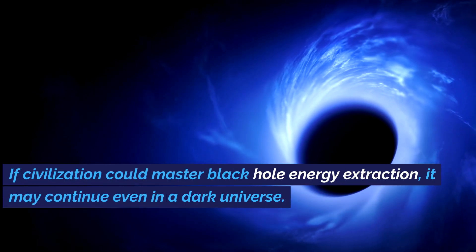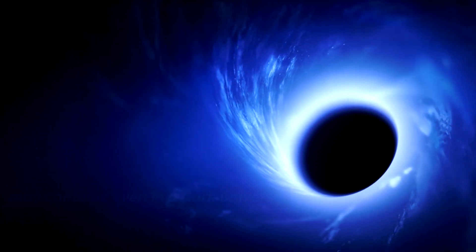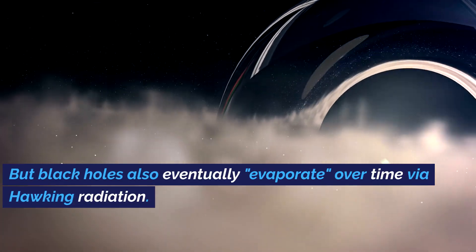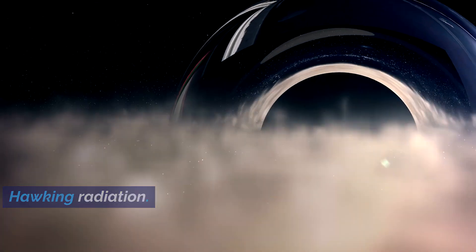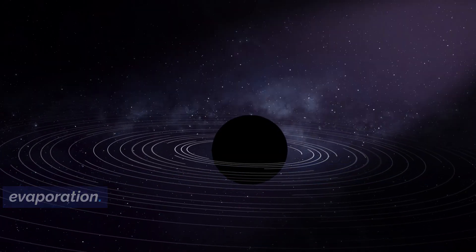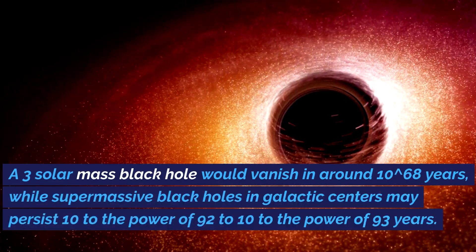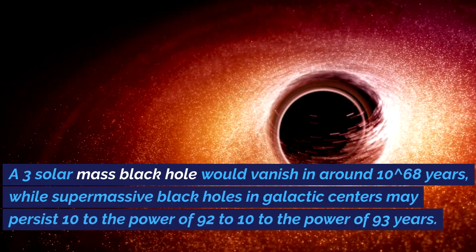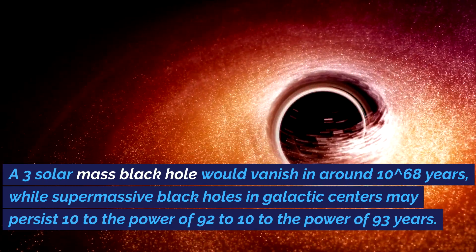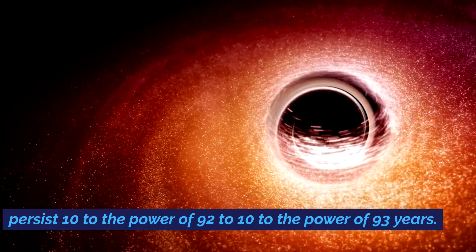If civilization could master black hole energy extraction, it may continue even in a dark universe. But black holes also eventually evaporate over time via Hawking radiation. Generally, the more massive the black hole, the slower its evaporation. A three solar mass black hole would vanish in around 10^68 years, while supermassive black holes in galactic centers may persist 10 to the power of 92 to 10 to the power of 93 years.